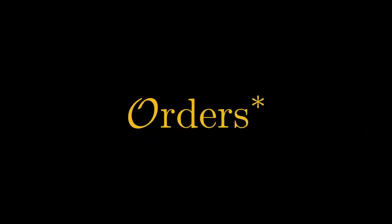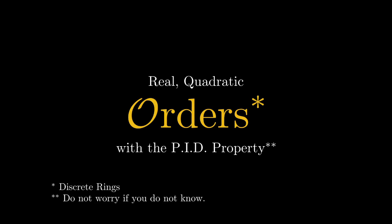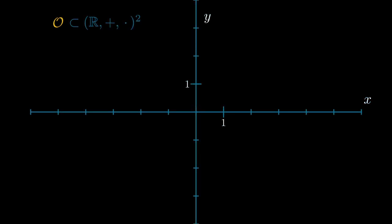To define ideal lattices we need orders. Those are sort of discrete rings. And to get started we are going to consider real quadratic orders first with the principal ideal property. Real quadratic essentially means that the order consists of just the integers with some extra number, a square root of a positive integer. Think of the square root of 2.